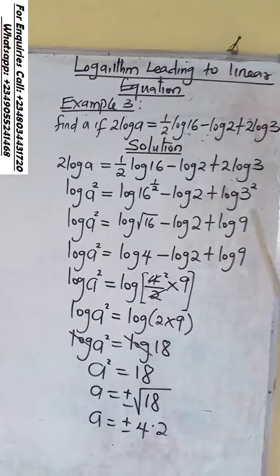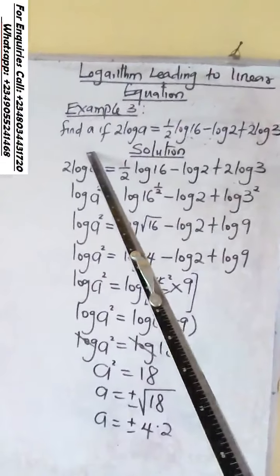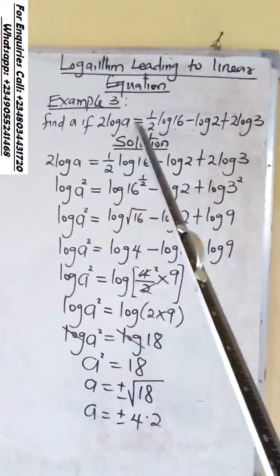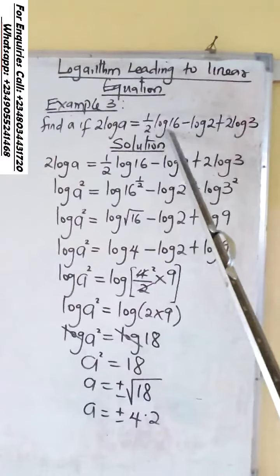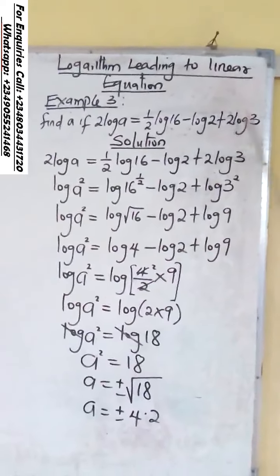Logarithm leading to linear equation. Example 3: Find A. Find the value of A if 2 log A equals half log 16 minus log 2 plus 2 log 3.